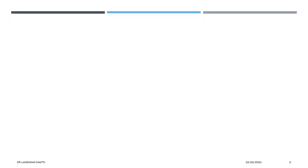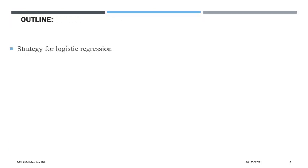Coming to the outline of today's lecture: first I would discuss the strategy for logistic regression. You might have noticed that the word 'regression' is attached here. In linear regression, the response happens to be continuous in nature. But in logistic regression, the response is discrete or categorical in nature. So why does 'regression' appear? Regression is especially meant for a continuous response variable.